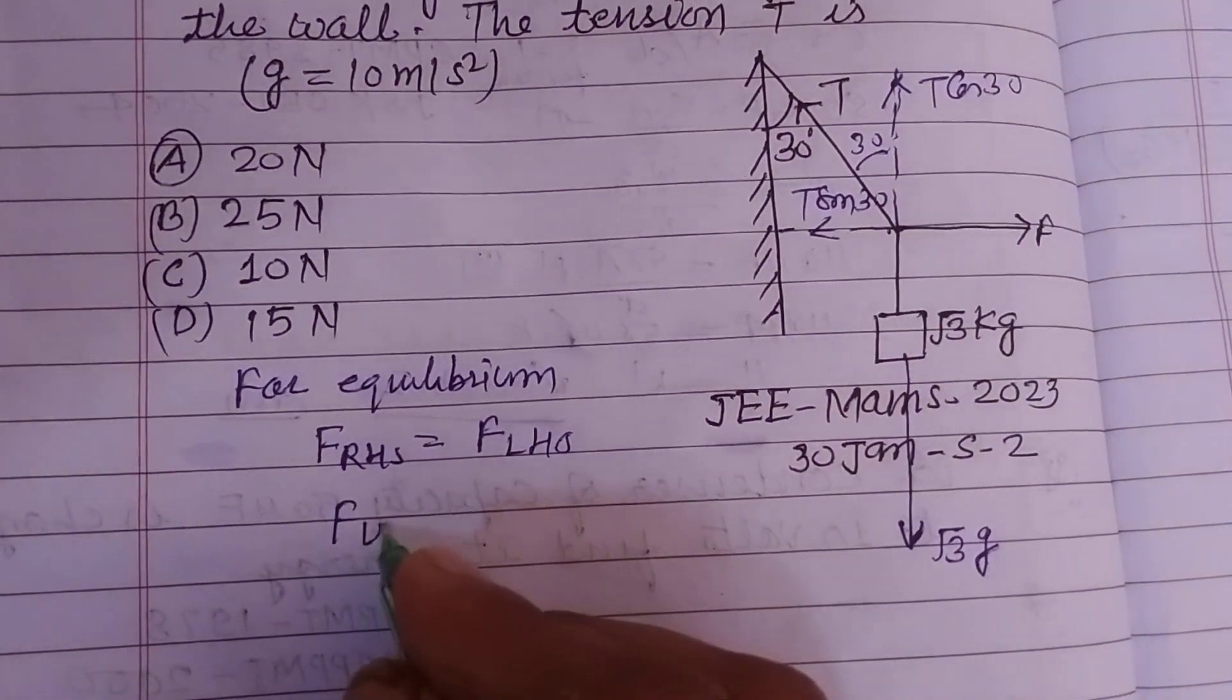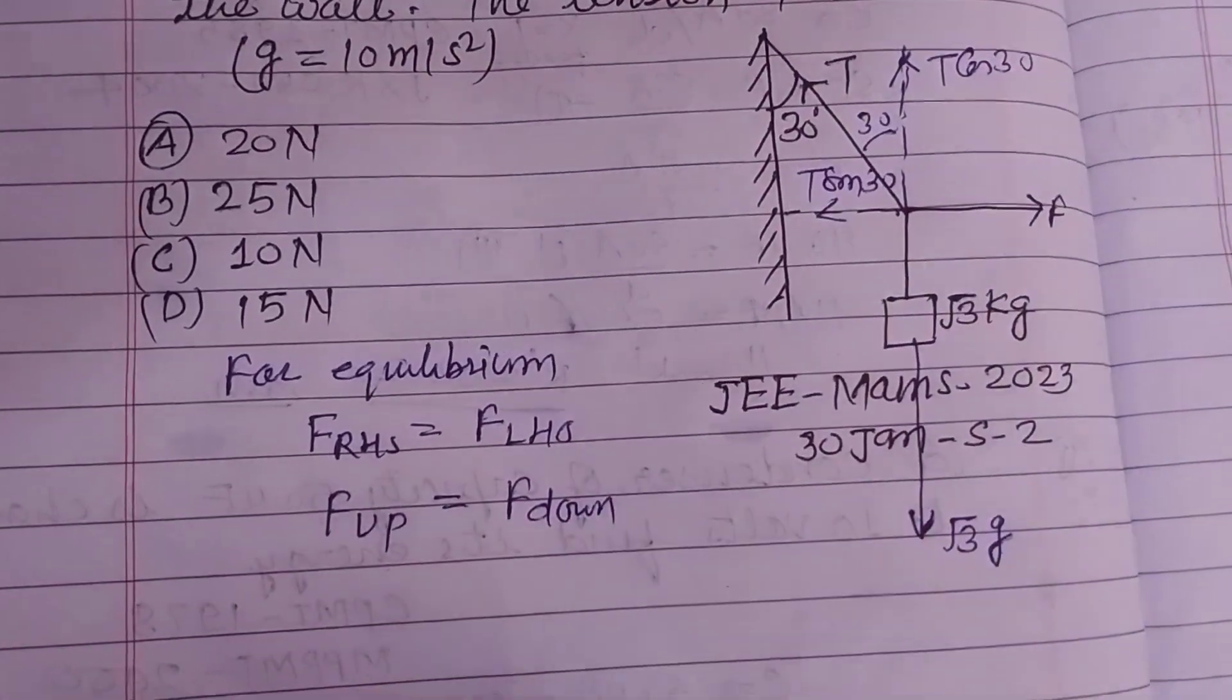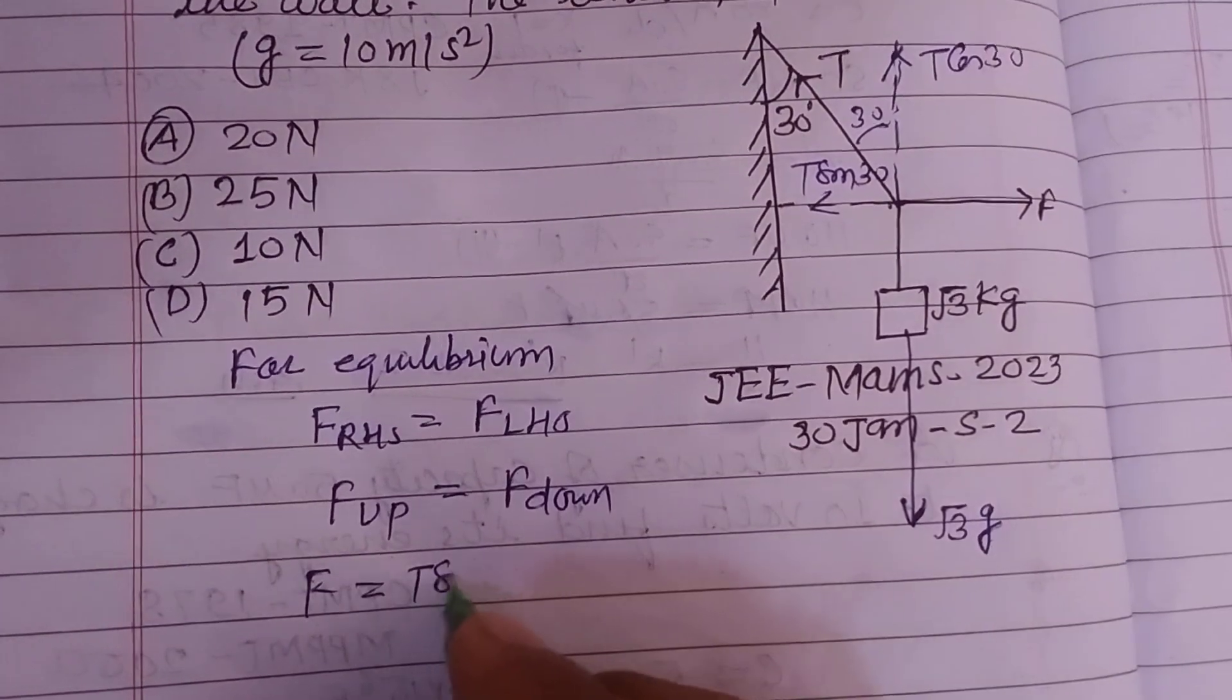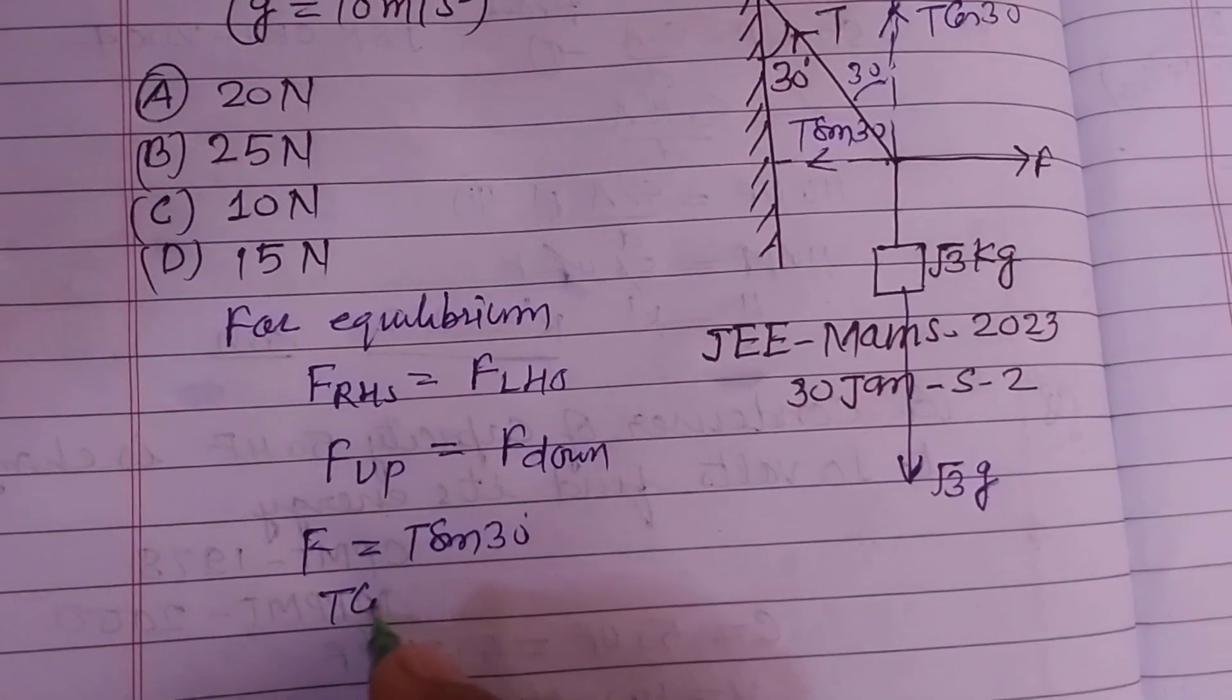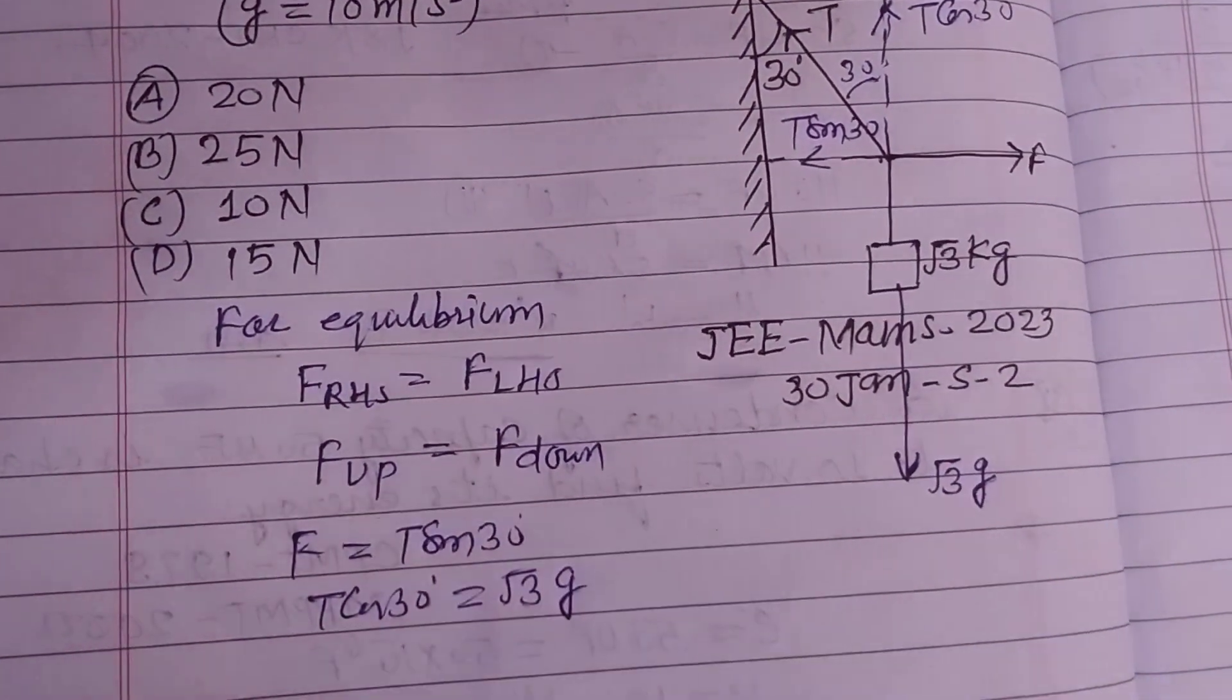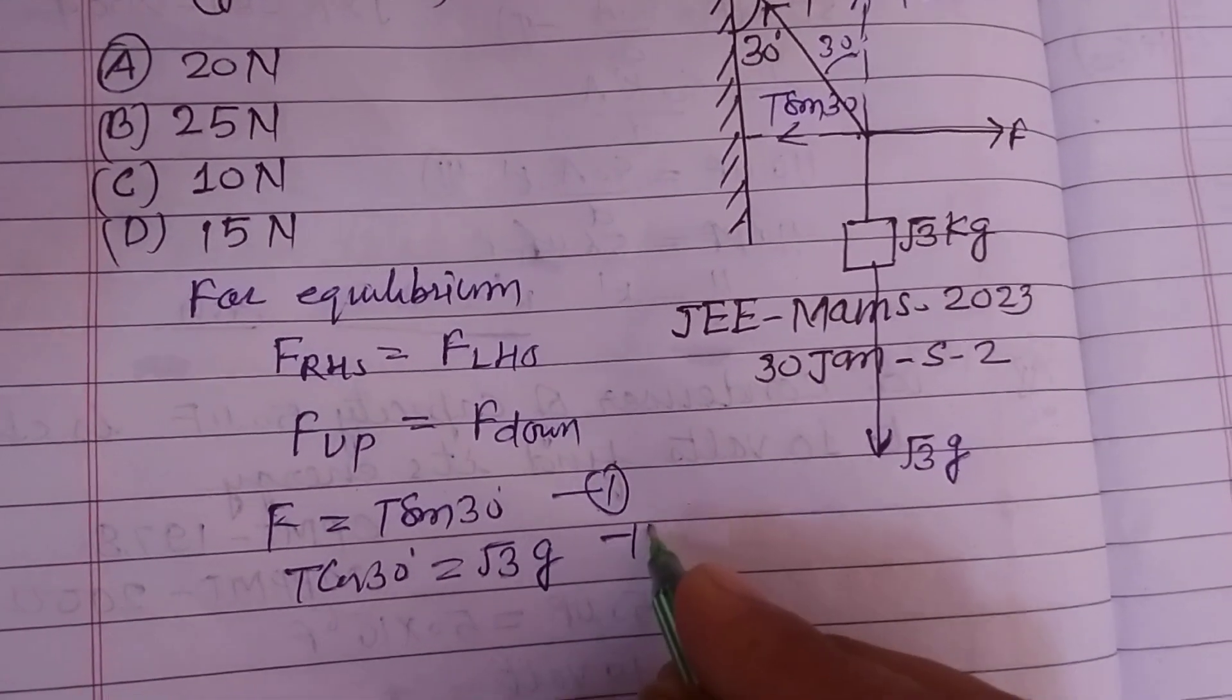Force of upward direction equals force of downward direction. So we put F equal to T sin 30° and T cos 30° equal to √3 G. Okay, so this is our first and this is our second equation.